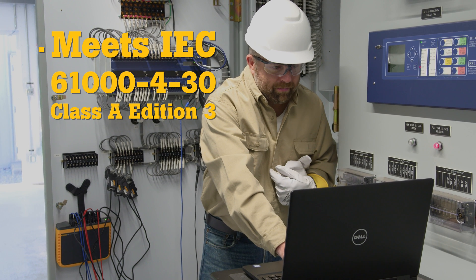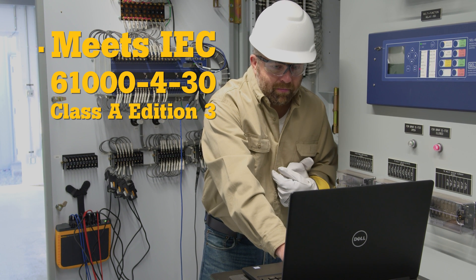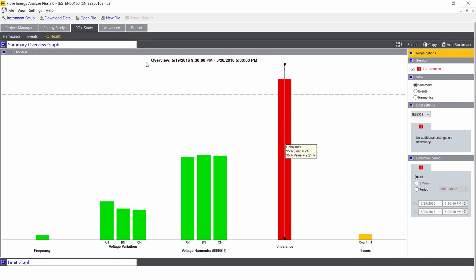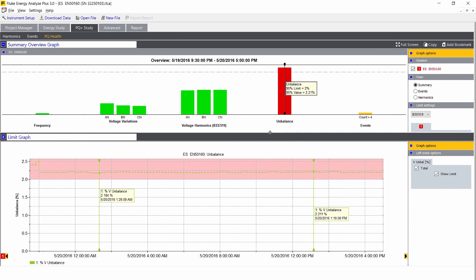This means technicians can be confident in their measurement results. The Class A standard defines measurement methods for each power quality parameter so you can obtain reliable, repeatable, and comparable results every time.